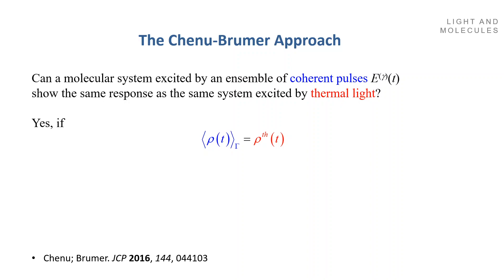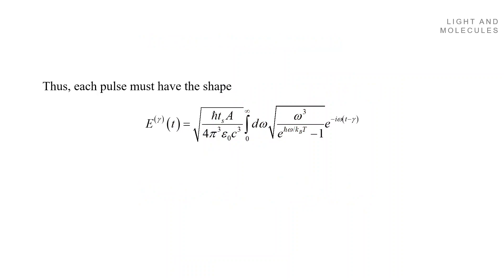As long as the average of an ensemble of coherent pulses corresponds to the density of the thermal light. And to have this correspondence, you must have that the average of the ensemble, the blue part, is given by the black-body radiation, the red part. And then, solving for this equation, you can have the pulse, the coherent pulse that should be averaged to get the thermal light.